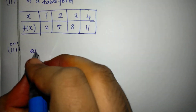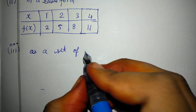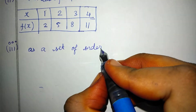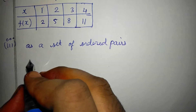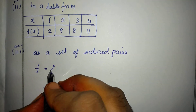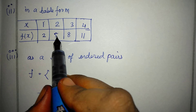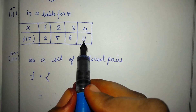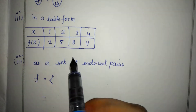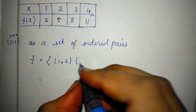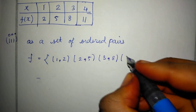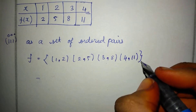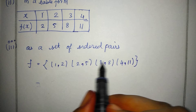Third subdivision: set of ordered pairs. f = {(1, 2), (2, 5), (3, 8), (4, 11)}.